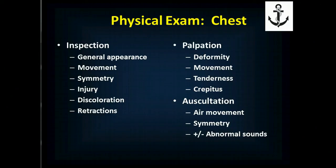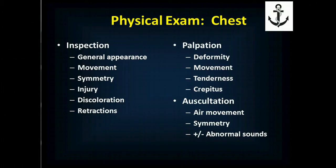Then auscultate — listen for air movement throughout the chest and whether it's symmetric on both sides. Are you hearing none on one side, some on the other, abnormal sounds in one area but not elsewhere? Identify the abnormal sounds based on your training. Wheezes are a high-pitched musical sound; rales are a crackling sound like rubbing the hair by your ear between your thumb and index finger; and ronchi is a rumbling sound. If you're comfortable differentiating between those, describe them; otherwise just note that you heard something unusual.